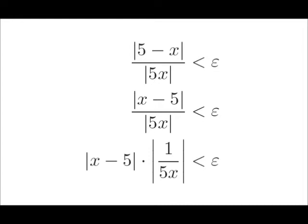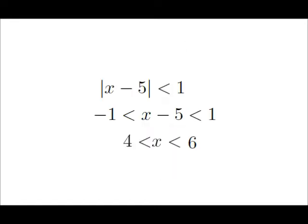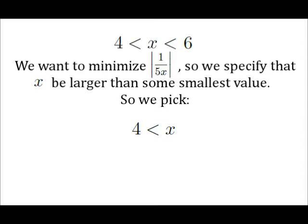We now have our absolute value of x minus c. We can start to do some reasoning to get rid of that absolute value of 1 over 5x. Since we're working on the limit as x approaches 5, we can say that the absolute value of x minus 5 will be less than, say, 1, which means x minus 5 will be between minus 1 and 1, so x will be between 4 and 6. Now we're looking at what values of x, when substituted into the absolute value of 1 over 5x, will constitute an upper bound.